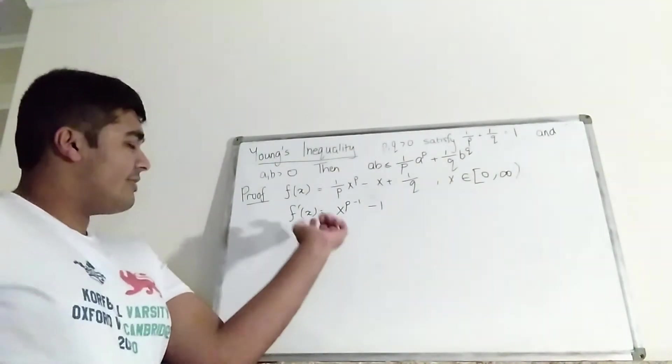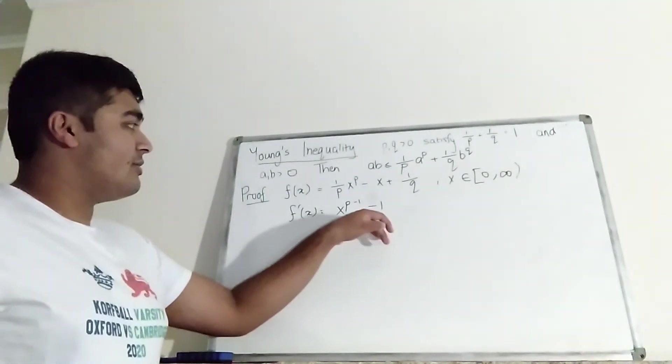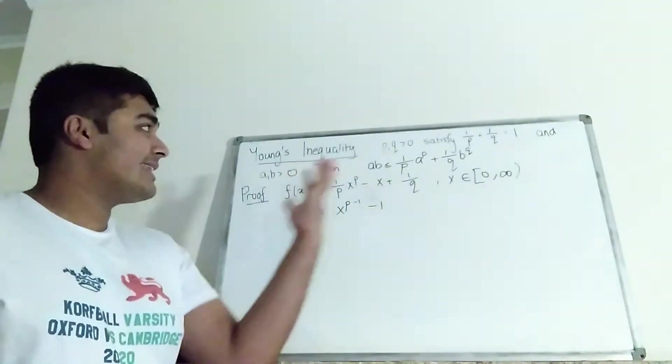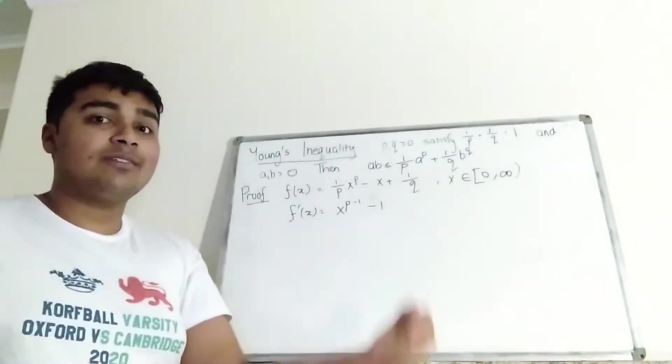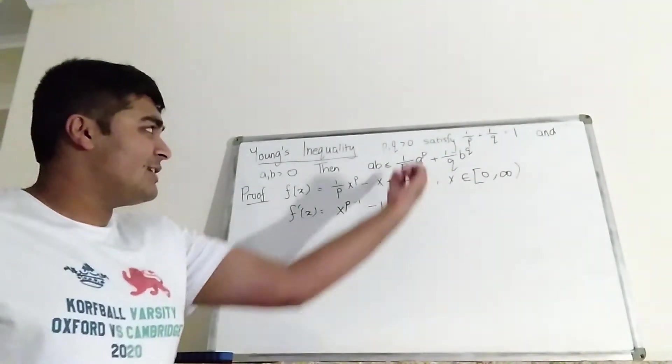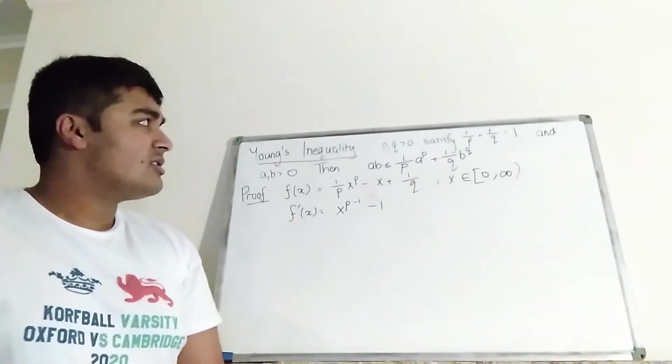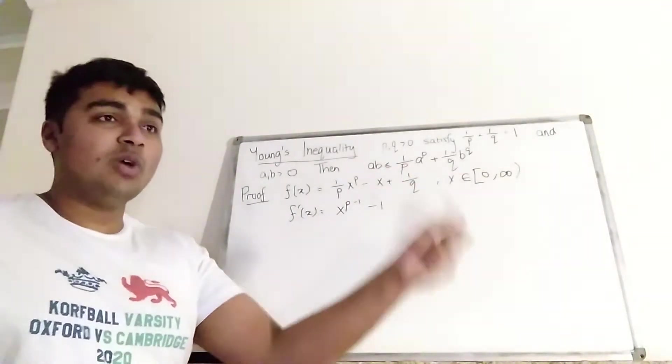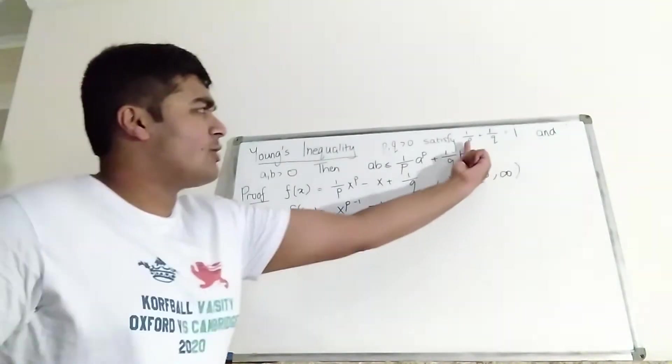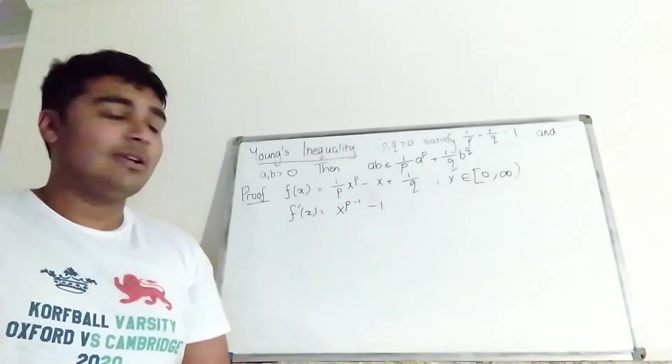Okay, now let's look at where f prime is 0, so the roots of f prime. Now, firstly, let's note that P must be bigger than 1. Why is that the case? Well, if P were to be less than or equal to 1, then that would mean that 1 over P would be at least 1. But because Q is positive, we know 1 over Q is strictly greater than 0. So if P were less than or equal to 1, then 1 over P plus 1 over Q would be some number strictly greater than 1. But that contradicts this thing here. So we know P must be strictly greater than 1.